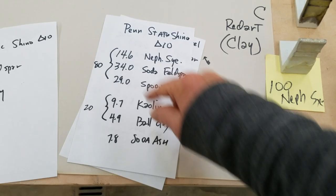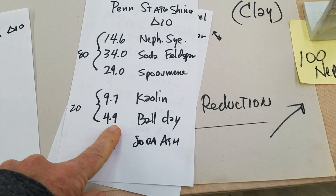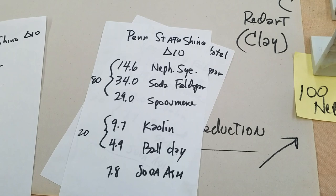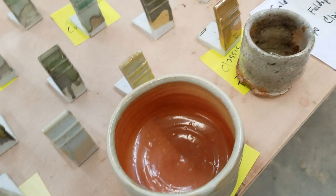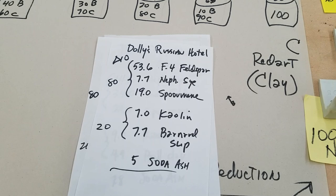Combine all those feldspars together and they total about 80. Then you put in the ball clay and kaolin together and they total approximately 20. You need soda ash to get carbon trapping - so if you're a little flexible and this adds up to about 16, it's close to 20 and you've got the region that you need to investigate. That's also true of the Dolly Russian Hotel glaze - combine your feldspar, your clay, and soda ash and you've got the same region.